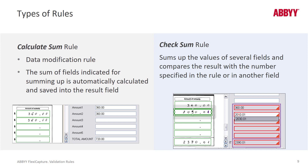The calculate sum rule will take a couple of fields — or however many you point it to — and it will add them up and put the value in a field that you designate. Maybe that's a field without region or maybe it's an existing field that's never populated. But perhaps more valuable is the checksum rule. The checksum rule specifies which numbers it should add up, and then you point to the field that it should add up to. And if there's an error, it will be flagged.